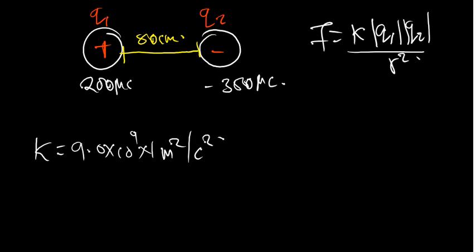R is the separation distance — in this case, R is 80 centimetres. Q1 and Q2 are the charges.